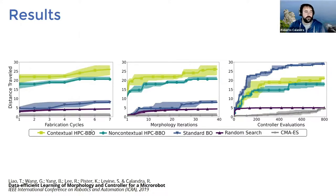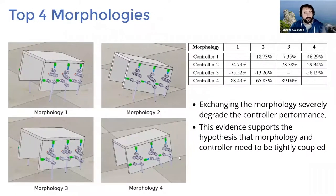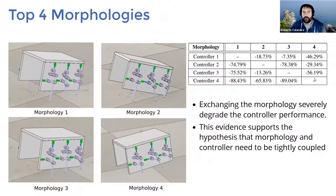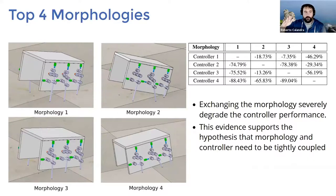In practice, we got four different morphologies working very well. We saw that each morphology's controller was highly specific to it — swapping controllers between morphologies severely decreased performance. Some of these morphologies and gaits were also quite close to what we observe in nature in certain insects, particularly with gaits where the front legs are positioned to push the robot to a more inclined stance for better grip.